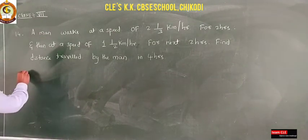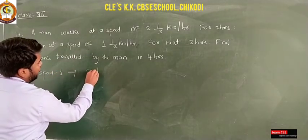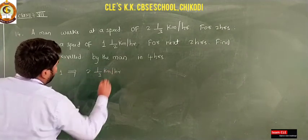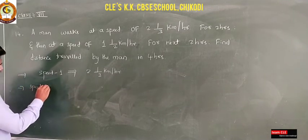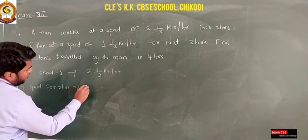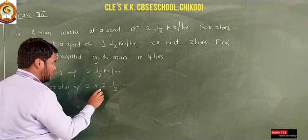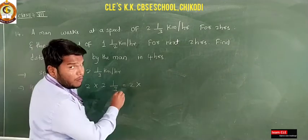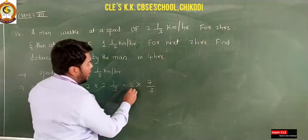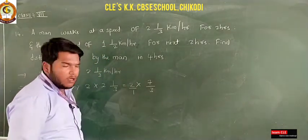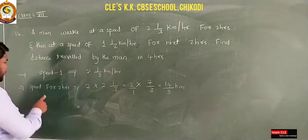Speed 1 is given as 2 and 1/3 km/h. To find the distance for the first 2 hours, multiply: 2 × 2 1/3. Convert 2 1/3 to an improper fraction: 3 × 2 = 6, plus 1 = 7, so 7/3. Now multiply 2 × 7/3: numerator 2 × 7 = 14, denominator 1 × 3 = 3, giving 14/3 kilometers for the first 2 hours.